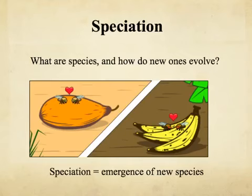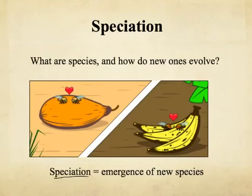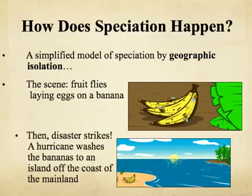I'm going to tell you a story that will be an example of how new species can form. Speciation we're going to define as the emergence of new species, and this story is going to be an example of speciation by geographic isolation, which we'll get to later in the video.